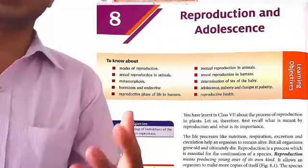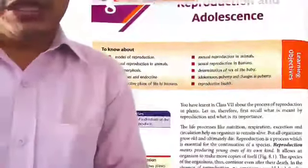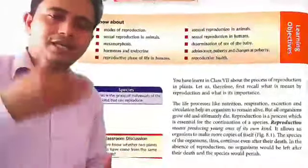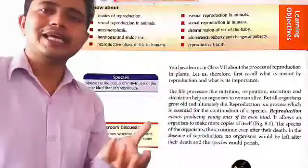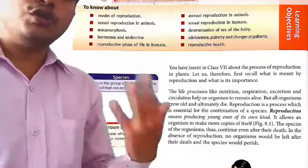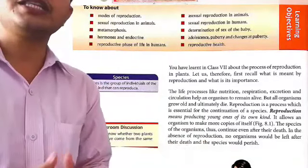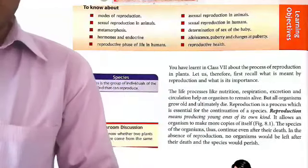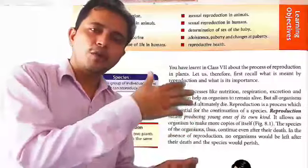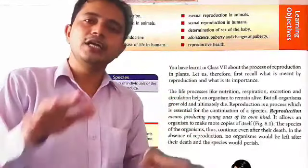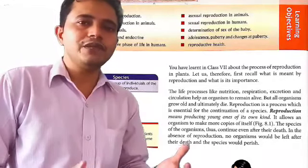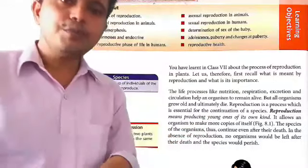Reproduction means producing young ones of its own kind — the same kind of species. Like a dog produces a dog, a hen lays an egg, a cat births a kitten, and human beings give birth to a baby. It allows an organism to make more copies of itself, just like a Xerox machine copies the original — reproduction produces the same kind of species.